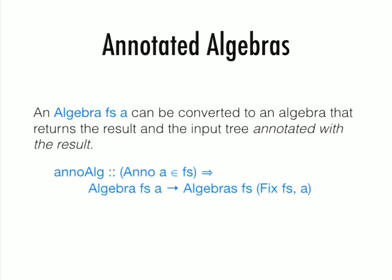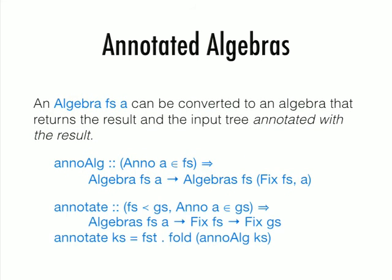If you have an Fs algebra, you can convert that to another Fs algebra which computes the result together with a copy of the input tree. That can be easily done. However, one advantage of this framework is that the algebra is first class. They are just a data structure, so you can go through it and do anything you want with them, including operations like this. With this anno algebra, you can define this function annotate which takes an Fs algebra and a fixed point of Fs. It basically applies the Fs algebra to every subtree, adding anno nodes into the tree, remembering the result for every subtree.